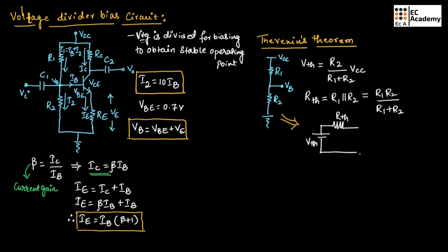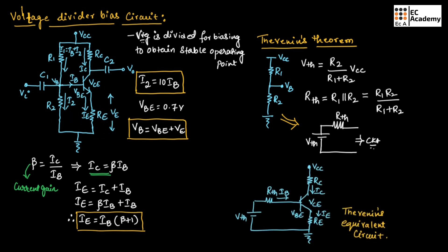This simplified circuit will be connected to the remaining part of the circuit. This is the circuit after simplification, known as the Thevenin's equivalent circuit. We have kept the output side as it is — only the input side has been simplified using Thevenin's theorem.